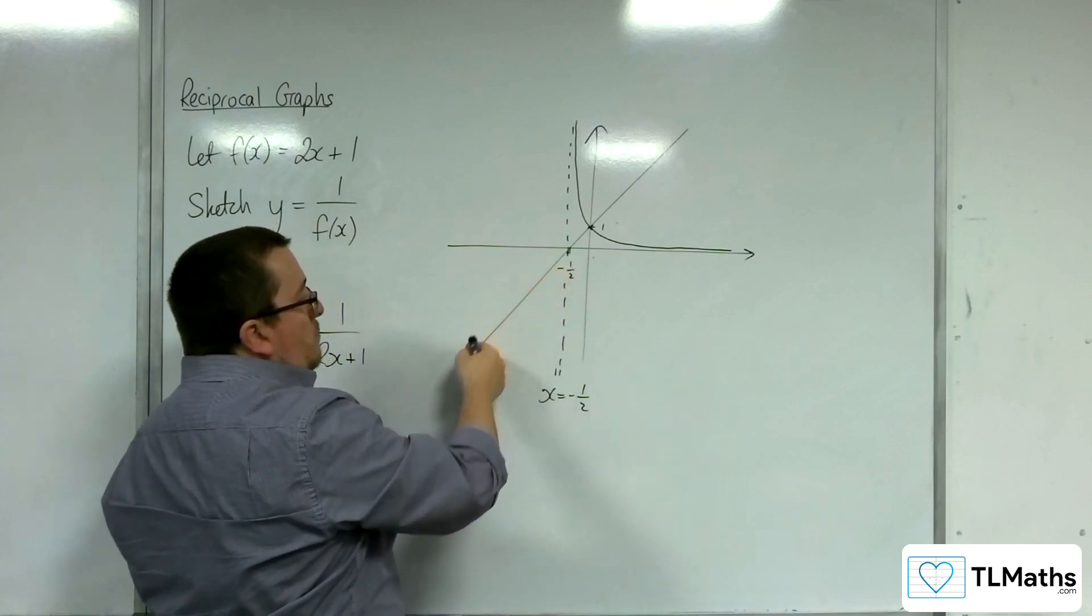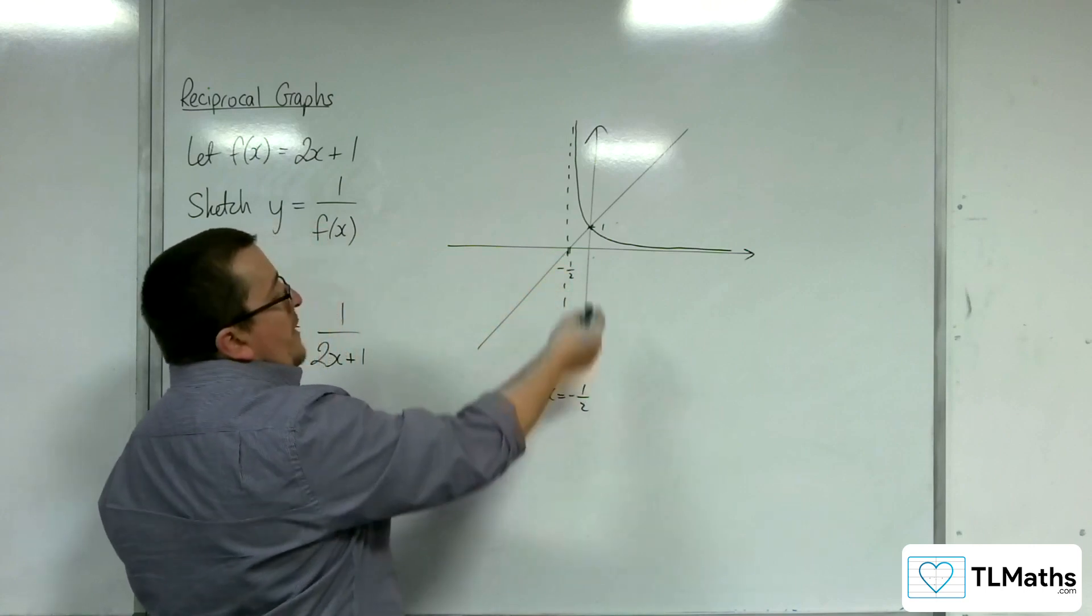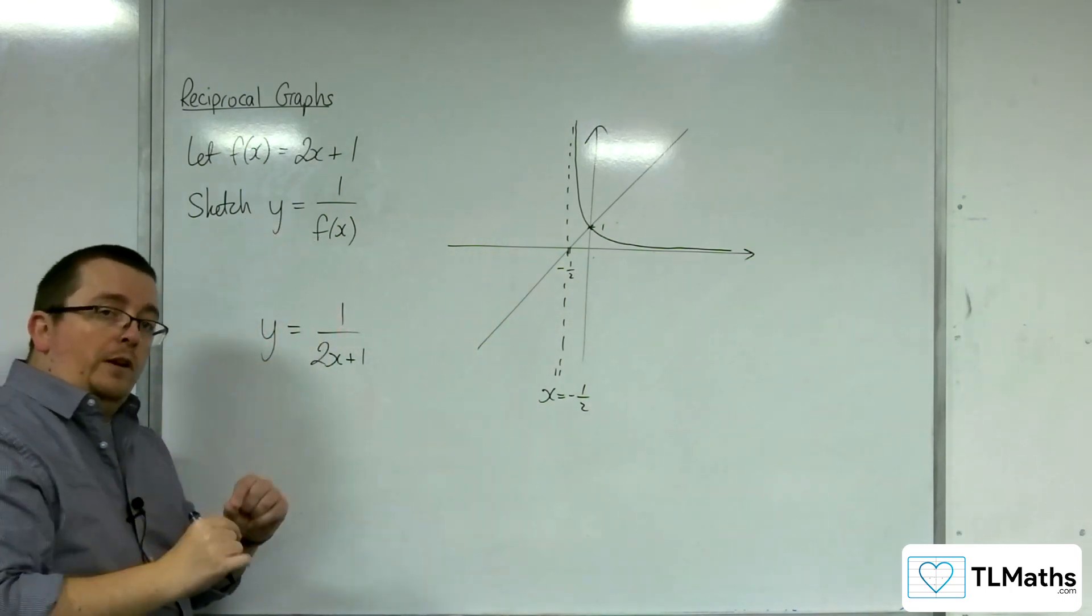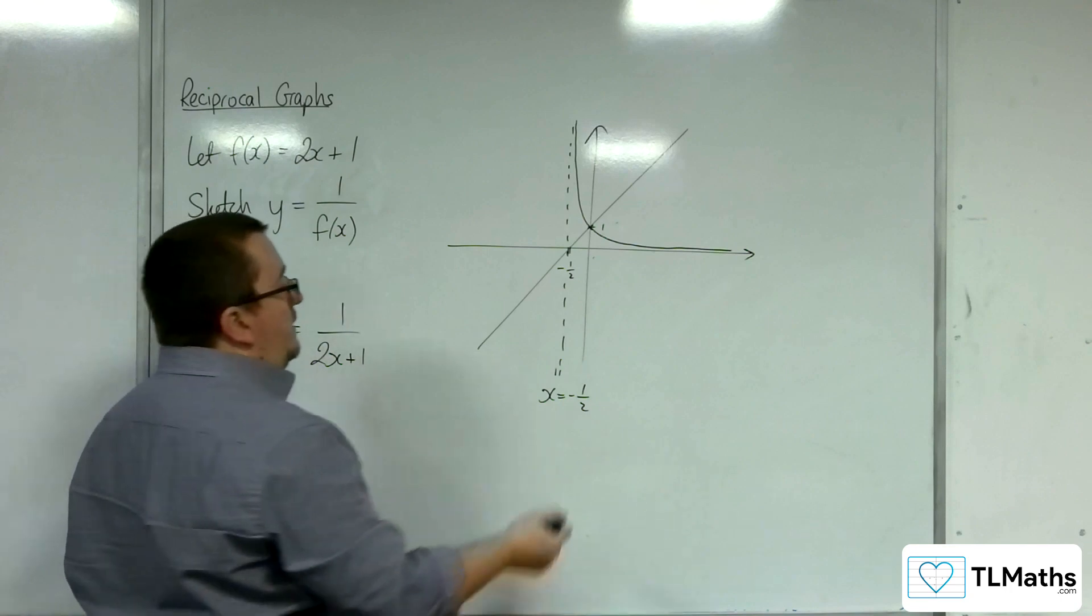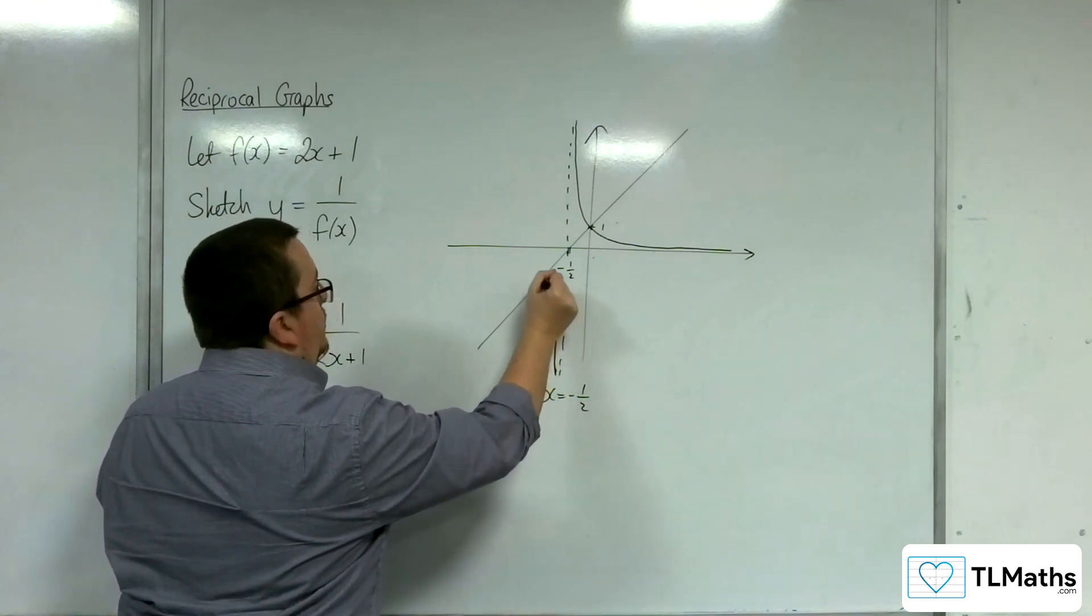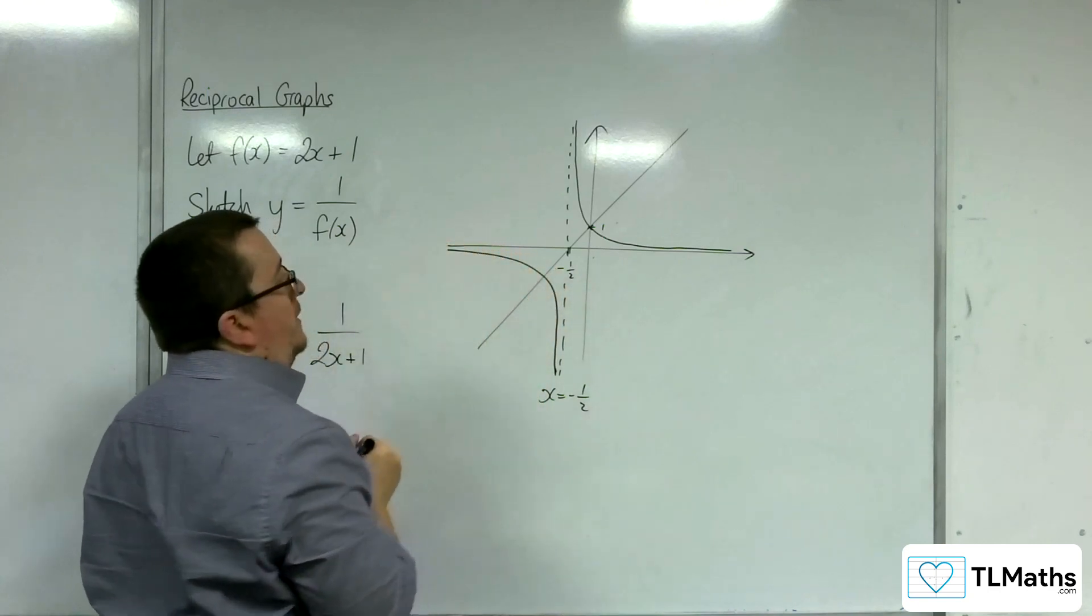And as x gets more and more negative, then our 1 over f(x) function will get closer and closer to 0. 1 over a larger and larger number. But still negative. And so, it must look like this.